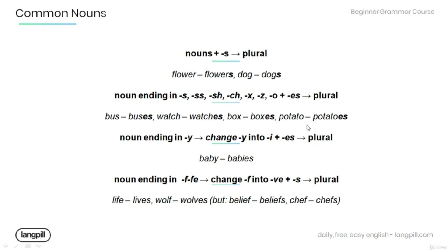Nouns ending in 'y' change to 'ies' to make a plural. For example: baby → babies. Nouns ending in 'f' or 'fe' change to 'ves' to make a plural. For example: life → lives, wolf → wolves.